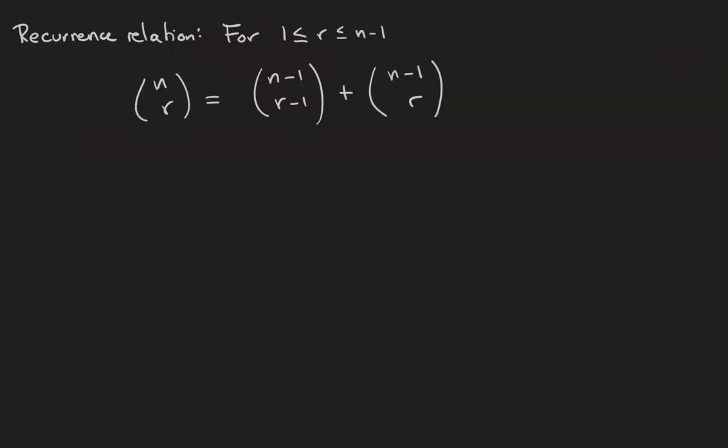First of all, we've got a recurrence relation on the binomial coefficients. As long as r is between 1 and n-1 inclusive, we can rewrite n choose r as n-1 choose r-1 plus n-1 choose r. I'm not going to do a full proof of this here, but here's an example that should give you the right idea. 5 choose 3 is equal to 4 choose 2 plus 4 choose 3.